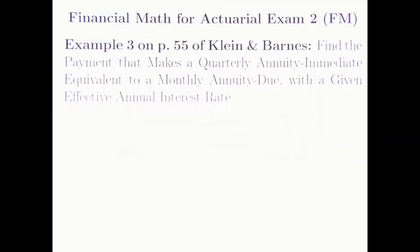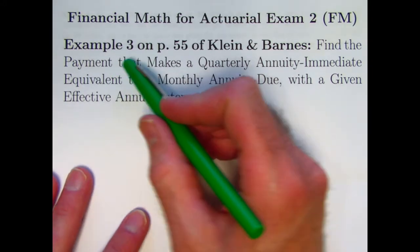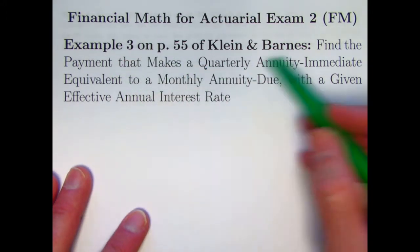Hello. In this video, we're going to do another example from this book, How to Pass Exam 2 by Klein and Barnes, because we're once again looking at a situation where payments for two annuities are occurring at different frequencies.